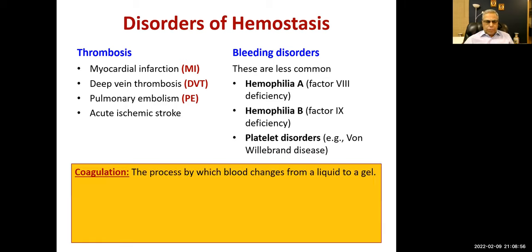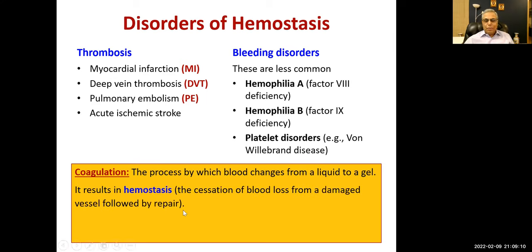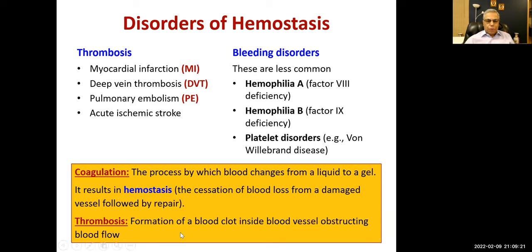Coagulation is the process by which blood changes from liquid to gel form. It results in hemostasis — cessation of blood loss from a damaged vessel — followed by inflammation and repair. Thrombosis is the formation of a blood clot inside the blood vessel, obstructing blood flow. Thrombosis occurs inside the blood vessel and is something unwanted.